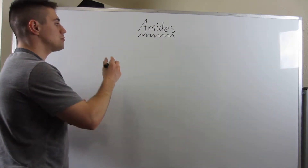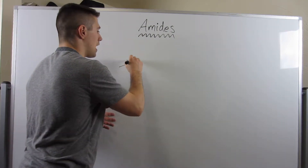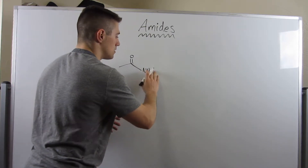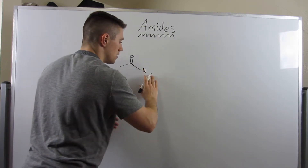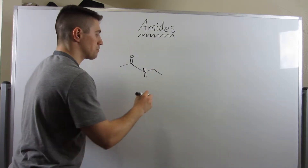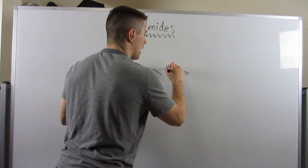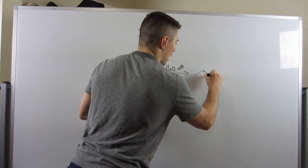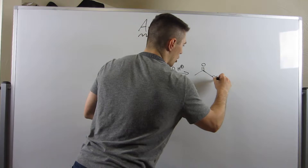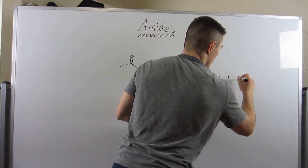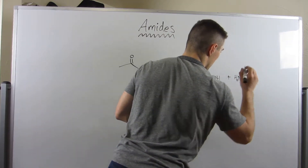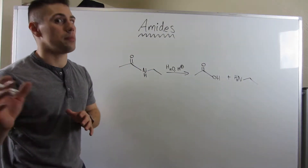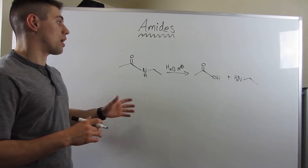I'm just going to show you guys first how we can go from an amide — let me draw something like this — if we pump back water in with acid, how we can get back a carboxylic acid that the amide must have come from. Here's the reaction, let's draw the mechanism, it'll make more sense. I'm sure you guys could probably do this already.